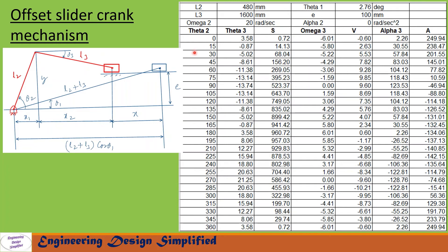In this table, theta2 is taken from 0 to 360 degrees at intervals of 15 degrees. In this column theta3 is calculated, and in this column slider displacement is calculated. When theta2 is 0 degrees, slider displacement is 0.72 mm. As theta2 increases, at 180 degrees it becomes maximum at 960.72 mm — that is when the slider reaches the leftmost position. After 180 degrees the slider returns to its rightmost position, and at 360 degrees it comes back to 0.72 mm.